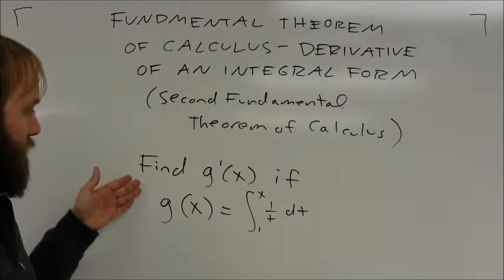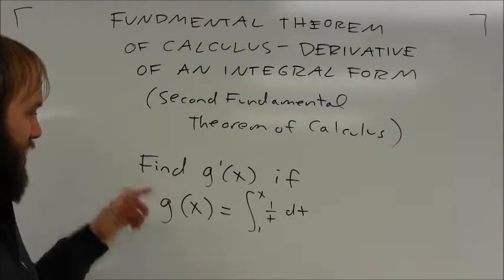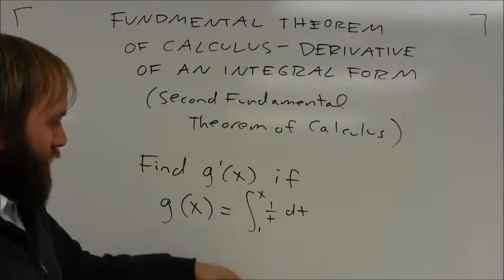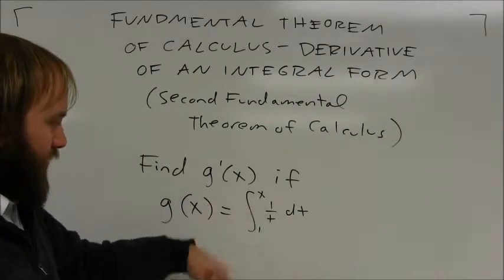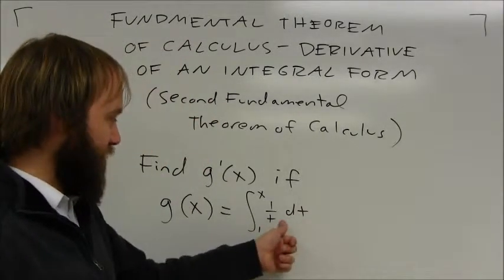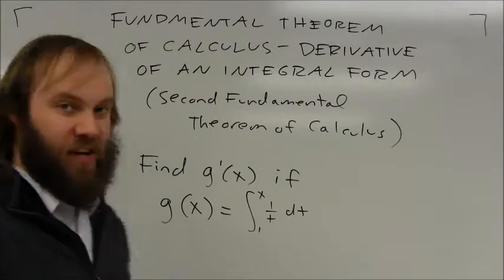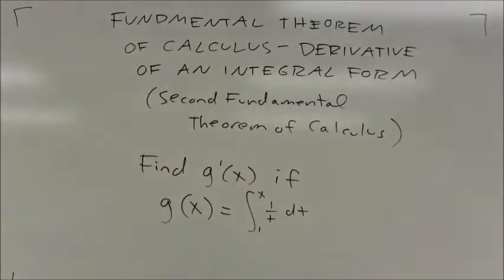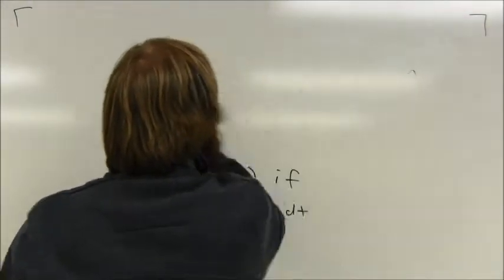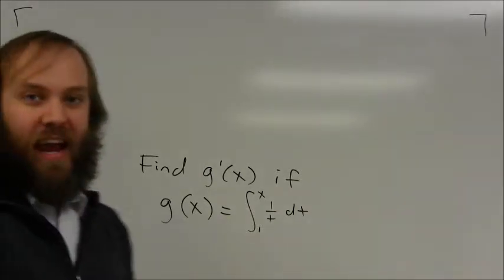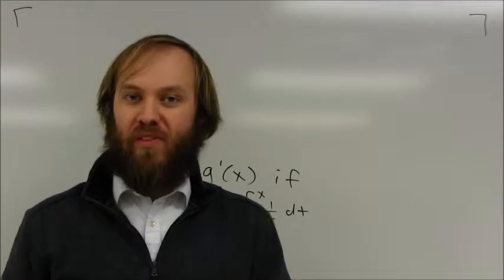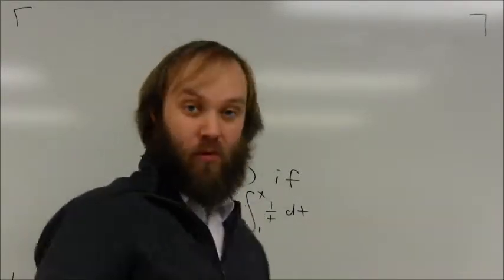I'm going to be trying to find g prime if I have some function g that is an integral from some constant value to some variable value of a function. Notice that this function is in terms of t — a different variable. You can go through this entire problem and see the relationship. It is a pretty simple pattern; you don't need to go through these steps every single time, but I will go through this example.